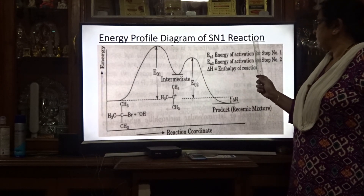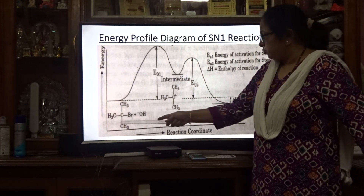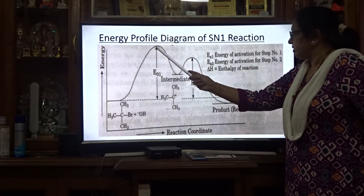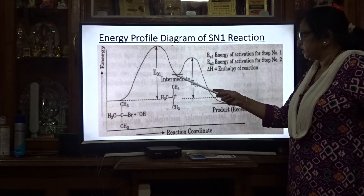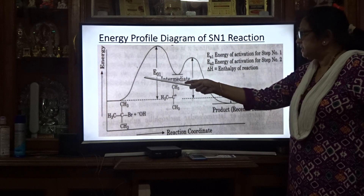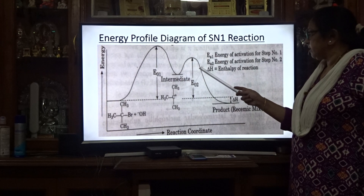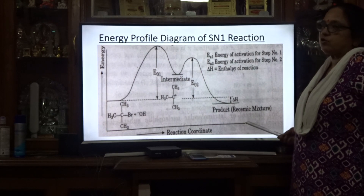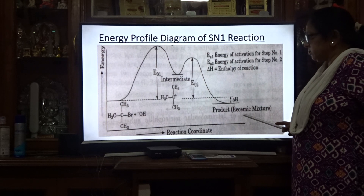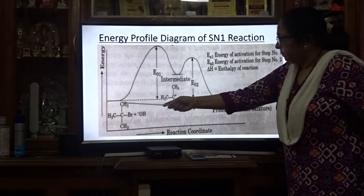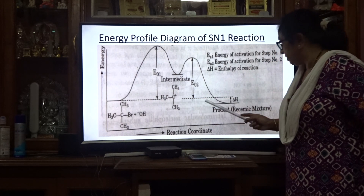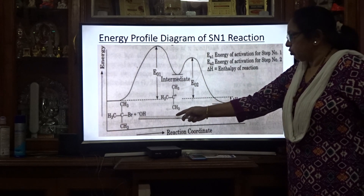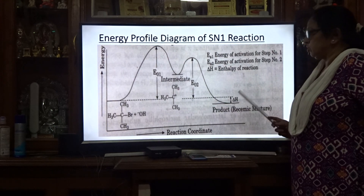This is the energy profile diagram of the SN1 reaction. The reactant, tertiary butyl bromide with NaOH, starts at lower energy; energy increases to a peak at the transition state, then decreases to the intermediate carbonium ion. A second energy barrier leads to the final product — a racemic mixture of dextrorotatory and levorotatory tertiary butyl alcohol — which has lower energy than the reactants.